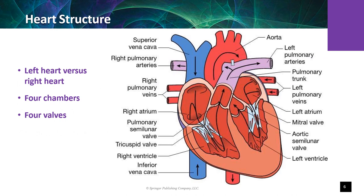The heart has four chambers: two atria at the top of the heart, one on the right and one on the left, and two ventricles at the bottom, one on the right and one on the left. The tricuspid valve connects the right atrium to the right ventricle. The right atrium, tricuspid valve, and right ventricle form the right side of the heart, which is a pump that receives deoxygenated blood from the systemic veins and pumps it into the pulmonary circulation.